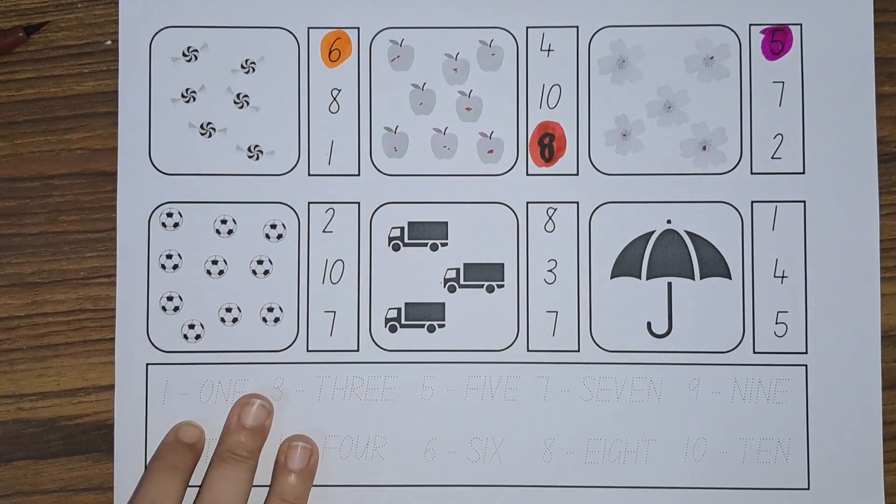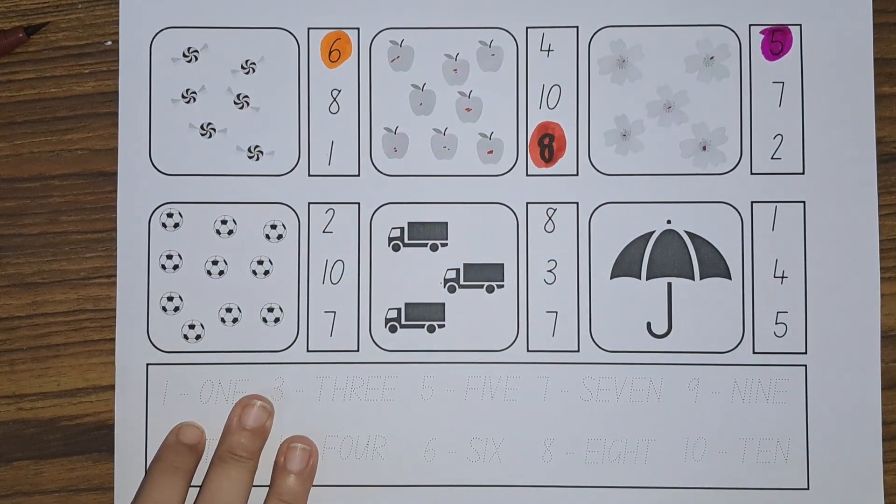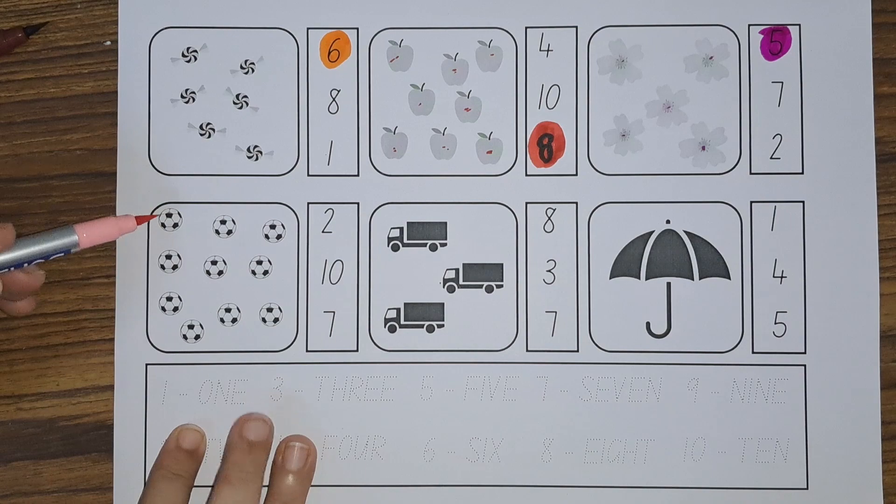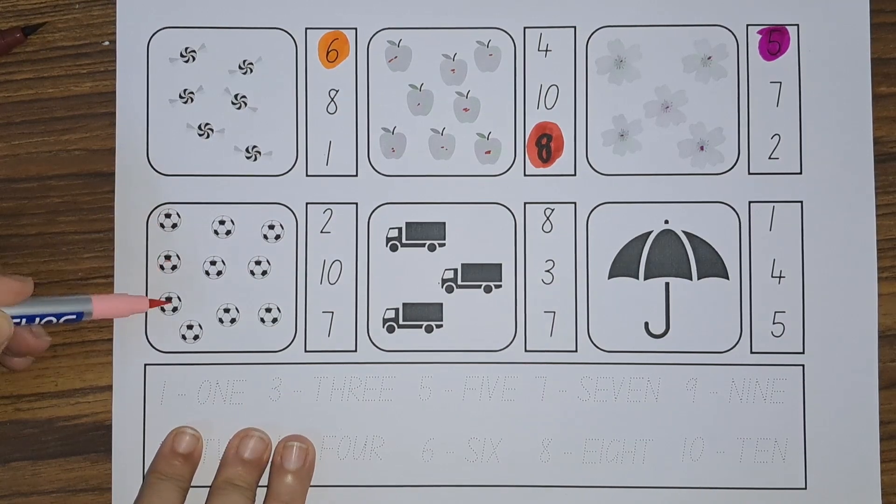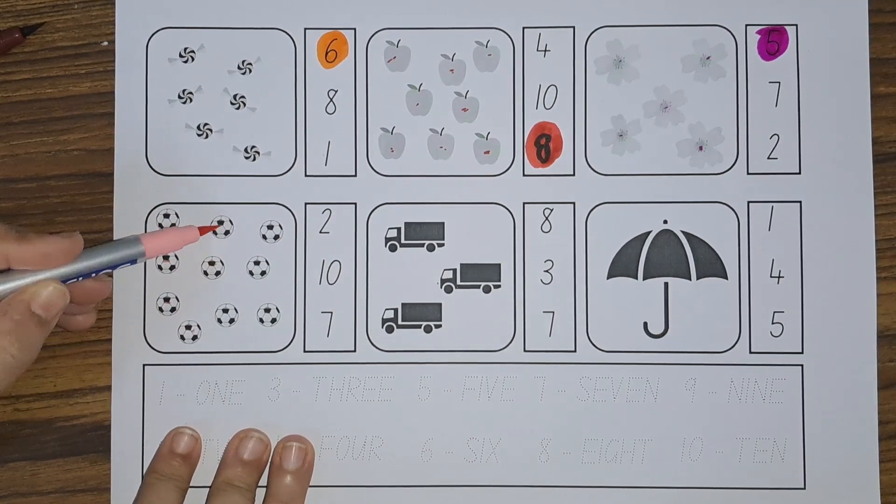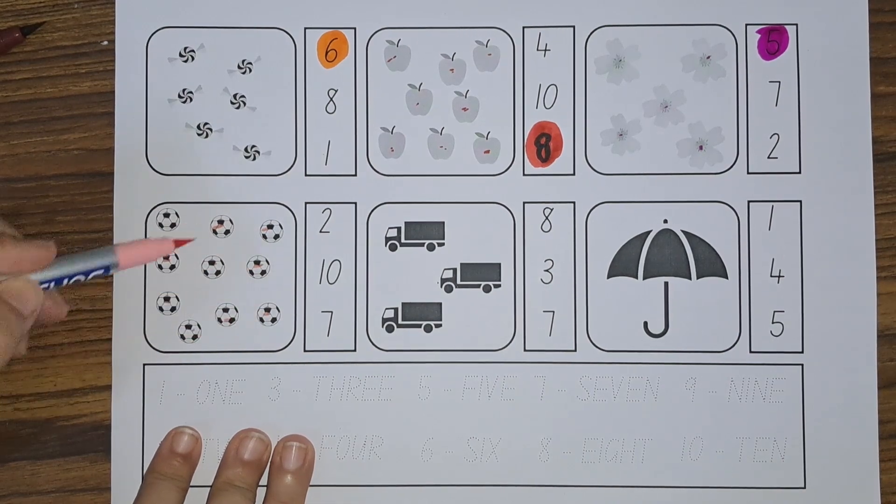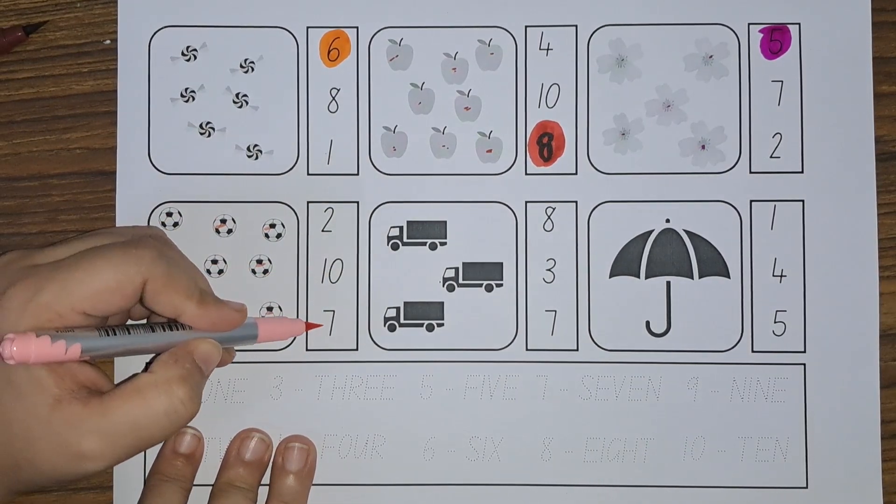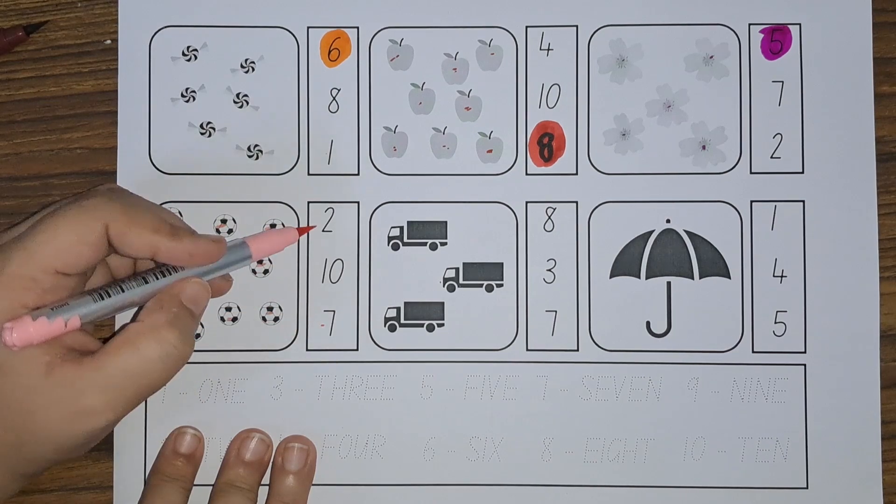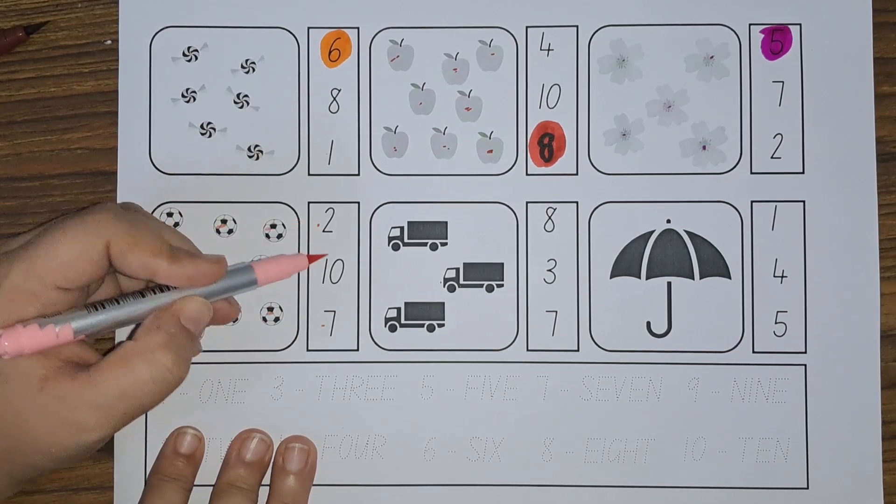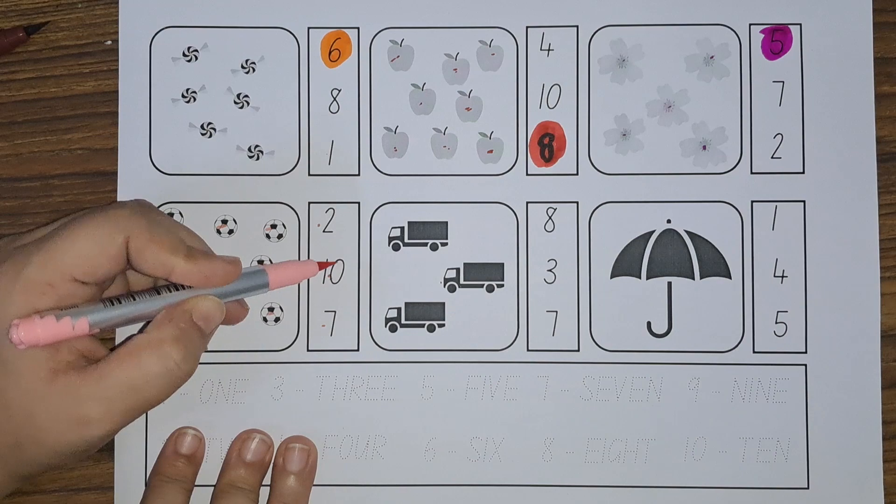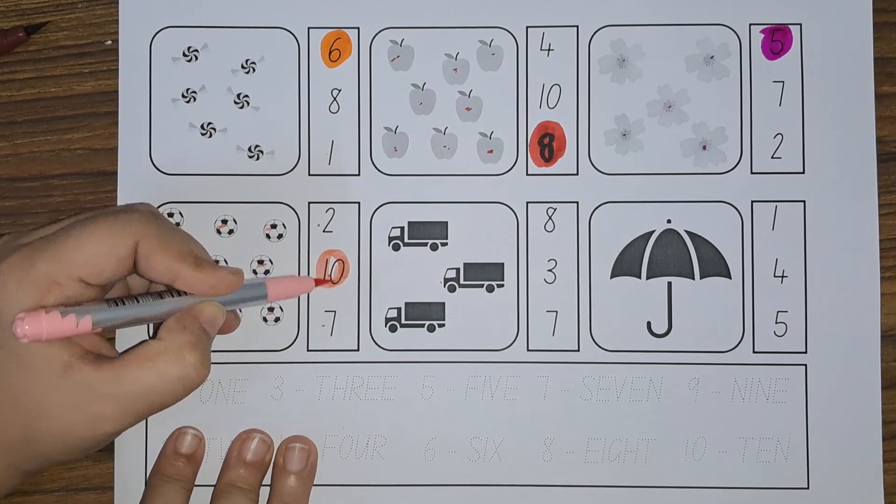Let us count the balls: one, two, three, four, five, six, seven, eight, nine, ten. Ten balls. Is this ten? No. Is this ten? No. Is this ten? Yes. One-zero, ten.